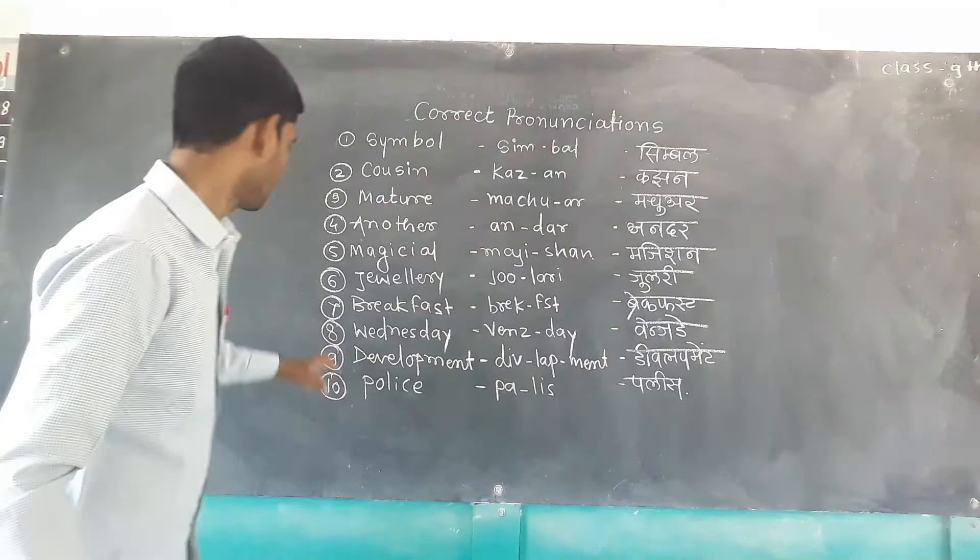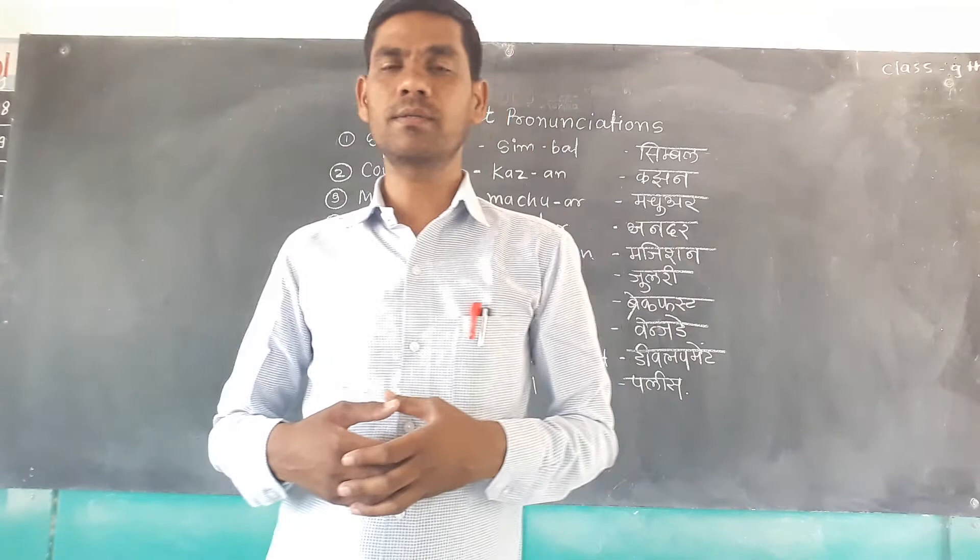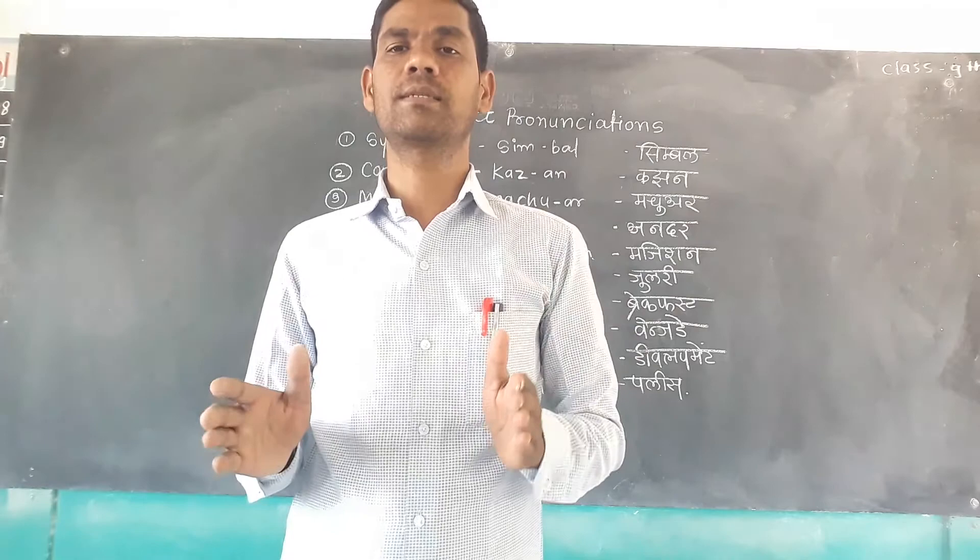Number ten is 'police,' spelled P-O-L-I-C-E. Most people pronounce it as 'police,' but that is not correct. The correct pronunciation is 'police.' It is 'police.'